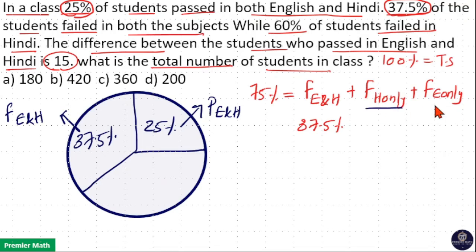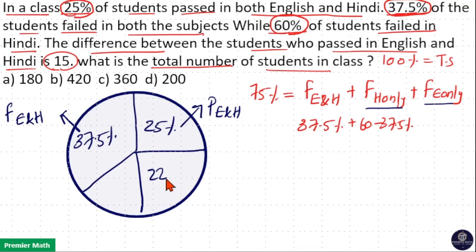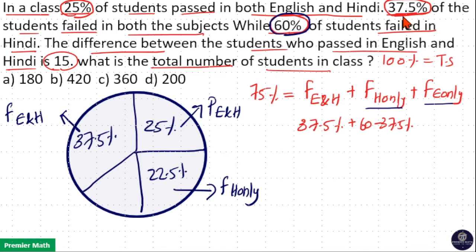The remaining covers students who failed in Hindi only plus students who failed in English only. The question says 60% of students failed in Hindi. So students who failed in Hindi only equals 60% minus 37.5%, which equals 22.5%. This is because the 60% includes students who failed in both English and Hindi as well, so students who failed in Hindi only equals students who failed in Hindi minus students who failed in both Hindi and English.